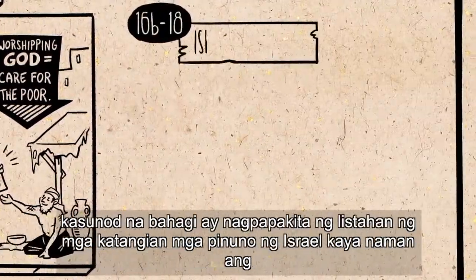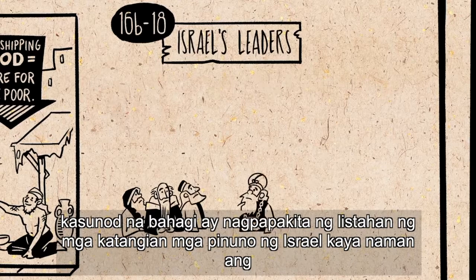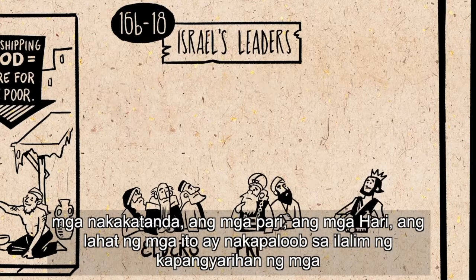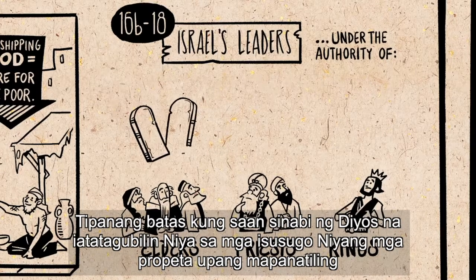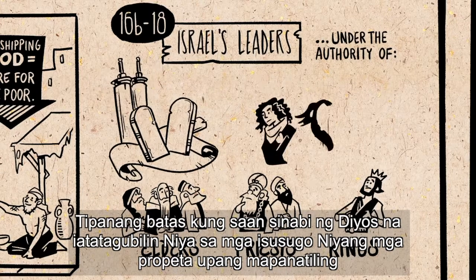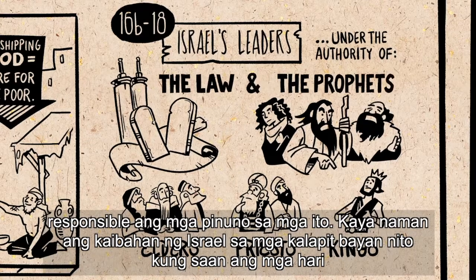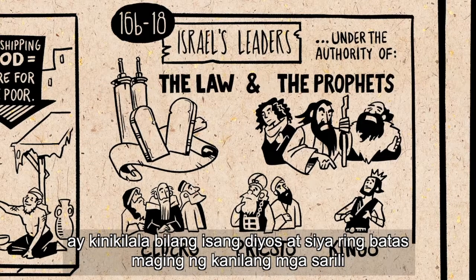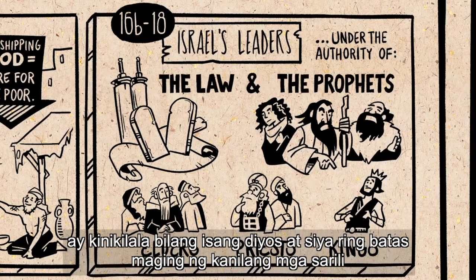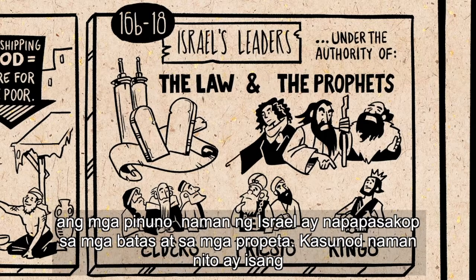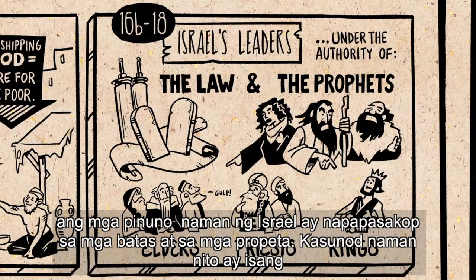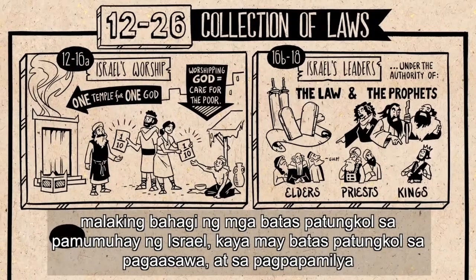The next section outlines the character qualities of Israel's leaders — the elders, the priests, the kings. These were all placed under the authority of the covenant laws, which God said he would enforce by sending prophets to keep the leaders accountable. So in contrast to Israel's neighbors, where kings were thought of as divine and a law unto themselves, Israel's leaders were subordinate to the law and the prophets.